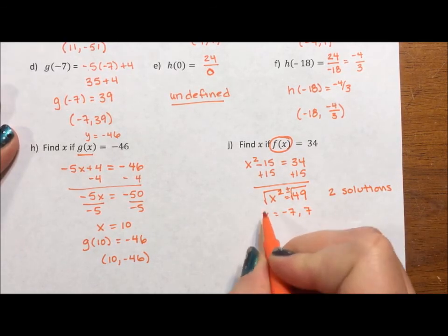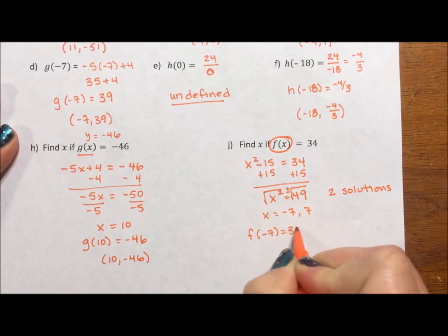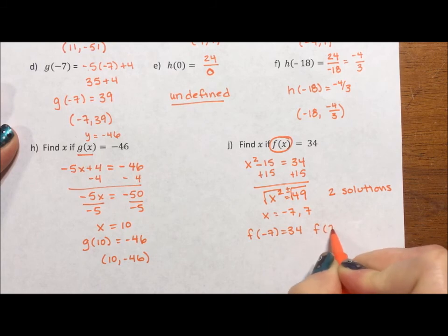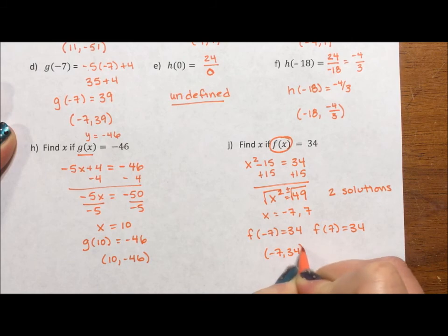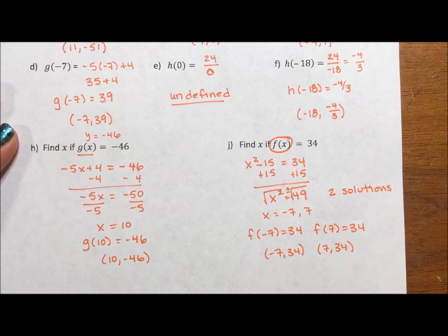So f(-7) equals 34. f(7) equals 34. So (-7, 34) is a point on this graph, as is (7, 34). So we get two solutions for the price of one.